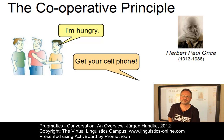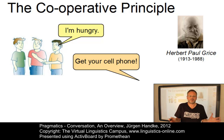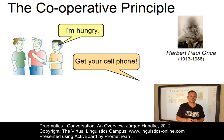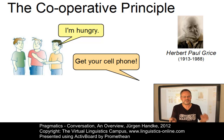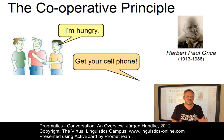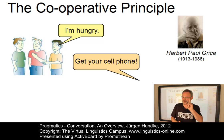What did you do? You interpreted my response like this: if I get my cell phone, I can call a pizza service and make use of their home delivery option. They would bring me a pizza which I can eat, and then I will no longer be hungry. In short, I said 'Get your cell phone,' and you considered my answer to be cooperative. In fact, I even violated a so-called conversational maxim. Which one? Well, let us postpone that for a while.